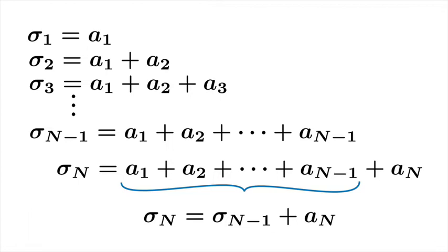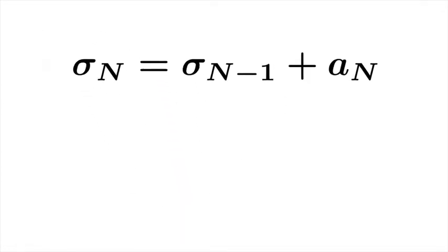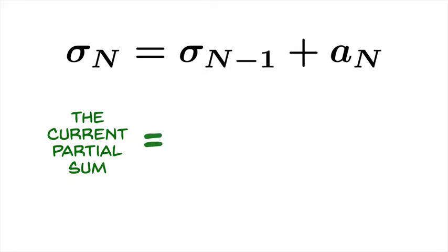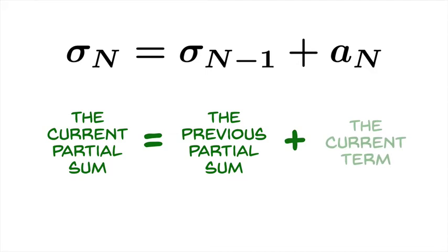This shouldn't be a shock, but this simple observation we can capture this way: if we're on term n, the current partial sum is equal to the previous partial sum plus the current term.